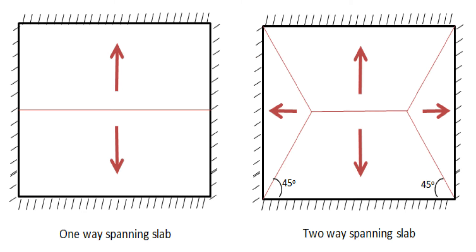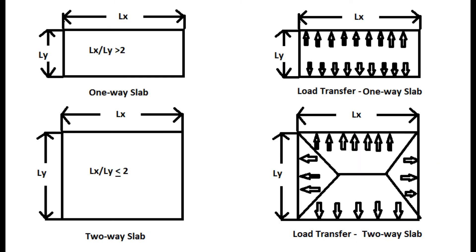The gravity load path depends on the type of floor slab, that is whether a slab is a one-way or a two-way system.